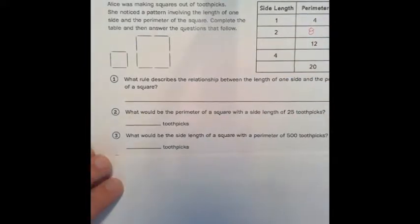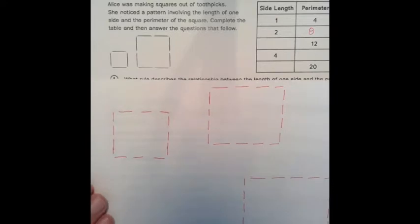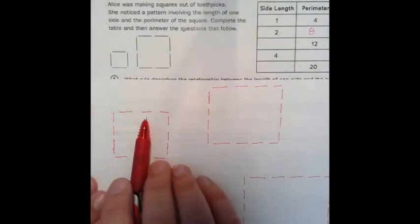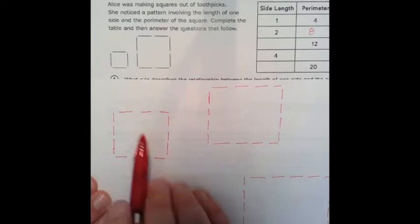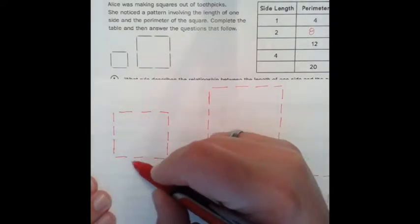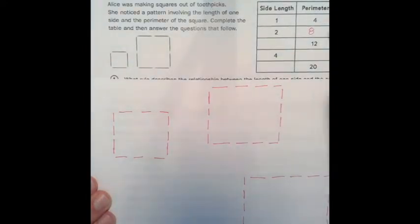And so now what I did to figure out the rest, I went ahead and drew other squares with the toothpicks here. So I went ahead and drew a square with three toothpicks. You'll see one, two, three on each side. So if I count each side, one, two, three, four, five, six, seven, eight, nine, 10, 11, 12. So when the square has a perimeter of 12, we know that each side is three.